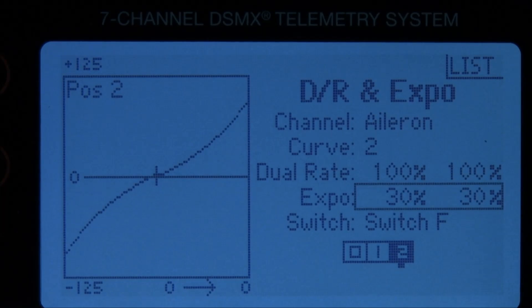There we are 30 percent. I don't need to have that in my lower rates so I'll just leave that alone. There's your exponential set right there. You press the scroll switch and lock it in. Hit the back switch and you're ready to fly.